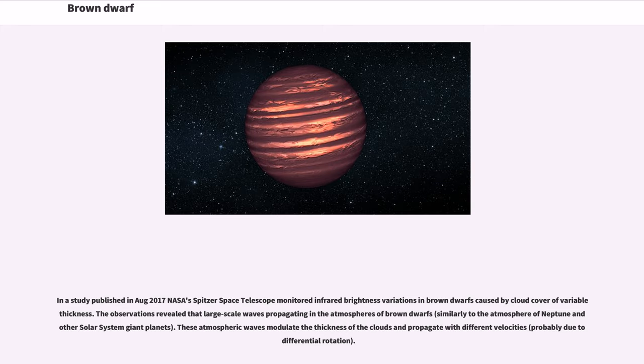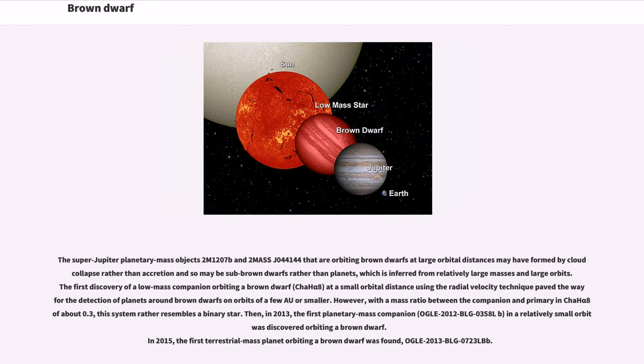The super-Jupiter planetary mass objects 2M1207b and 2MASS J04414489 that are orbiting brown dwarfs at large orbital distances may have formed by cloud collapse rather than accretion and so may be sub-brown dwarfs rather than planets. The first discovery of a low mass companion orbiting a brown dwarf at a small orbital distance using the radial velocity technique paved the way for the detection of planets around brown dwarfs on orbits of a few AU or smaller. Then in 2013, the first planetary mass companion in a relatively small orbit was discovered orbiting a brown dwarf. In 2015, the first terrestrial mass planet orbiting a brown dwarf was found: OGLE-2013-BLG-0723LBb.